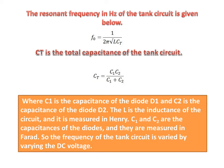The resonance frequency in Hertz of the tank circuit is given by: F equals 1 divided by 2π multiplied by the square root of L into Ct, where Ct is the total capacitance of the tank circuit. Ct equals C1 multiplied by C2, divided by C1 plus C2, where C1 is the capacitance of diode D1 and C2 is the capacitance of diode D2.